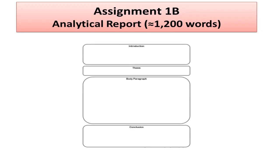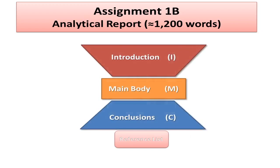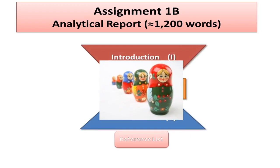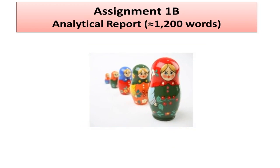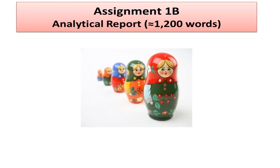The structure of Assignment 1B seems pretty clear in the instructions. You need to write about 1,200 words, including an introduction, main body, conclusion, and a reference list. Typically, these sections should be organized like a Russian doll. The big doll is the entire assignment, which contains smaller dolls that can be read independently from each other, like smaller individual texts.